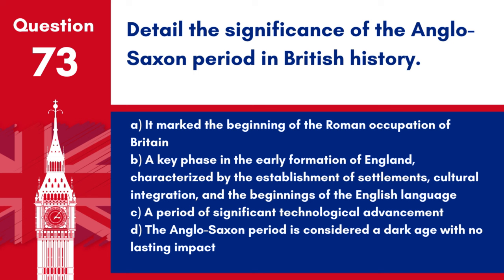Question 73: Detail the significance of the Anglo-Saxon period in British history. a. It marked the beginning of the Roman occupation of Britain. b. A key phase in the early formation of England, characterized by the establishment of settlements, cultural integration, and the beginnings of the English language. c. A period of significant technological advancement. d. The Anglo-Saxon period is considered a dark age with no lasting impact. Answer: b. The Anglo-Saxon period laid the foundations for the English nation.